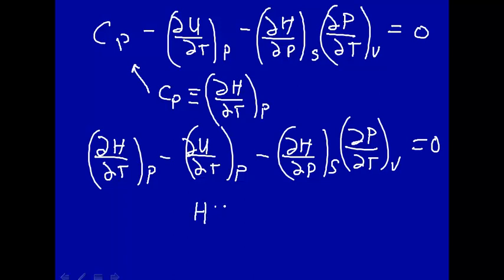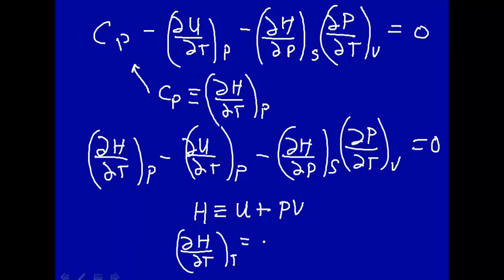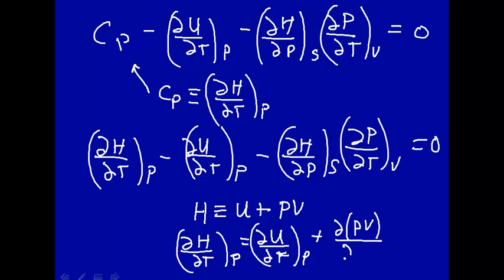We know that H is defined as U plus PV. So how H changes with temperature at constant pressure equals how U changes with temperature at constant pressure, plus how PV changes with temperature at constant pressure. We just took the derivative of H = U + PV with respect to temperature at constant pressure.